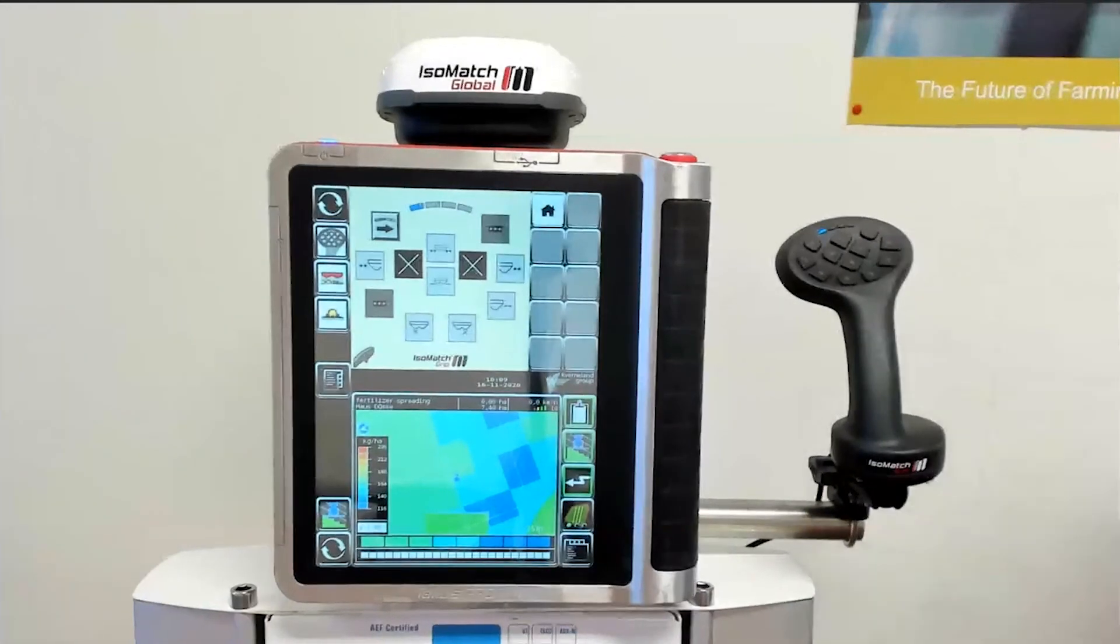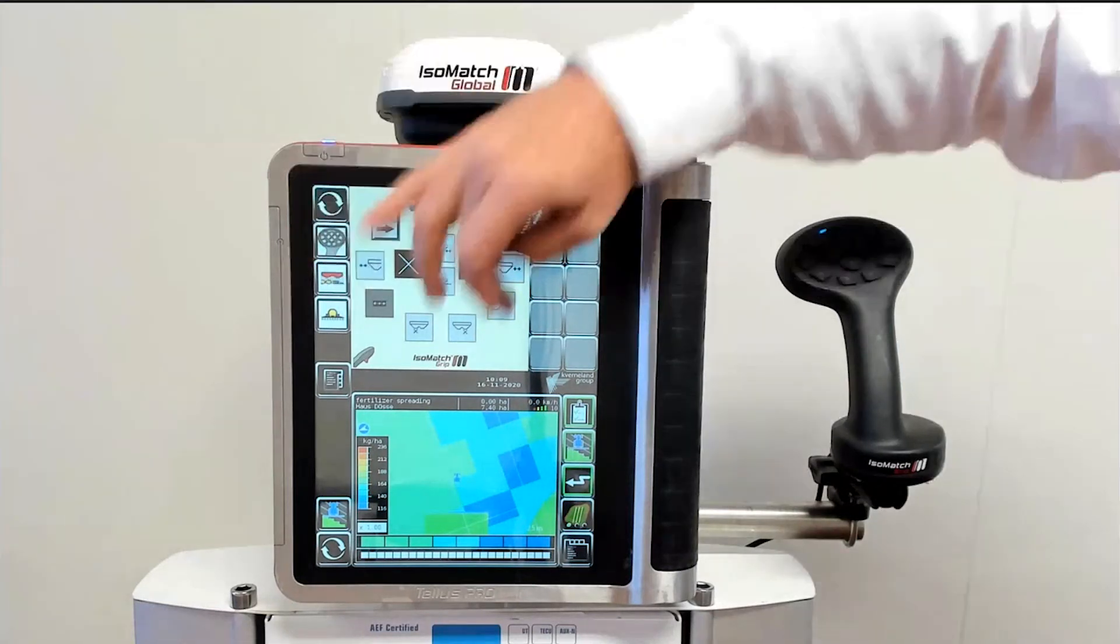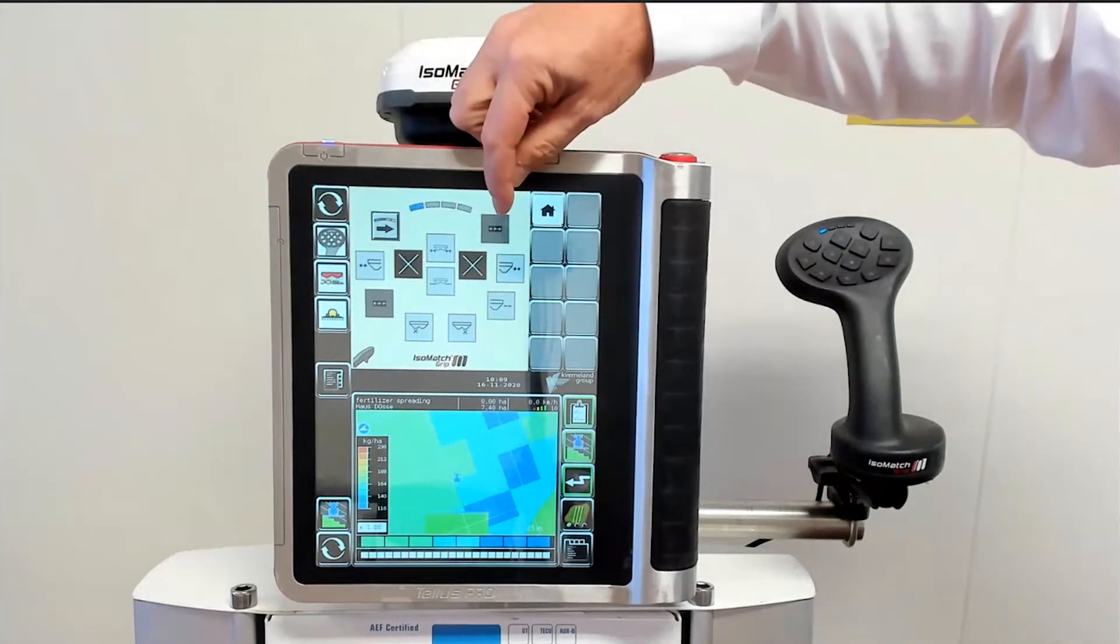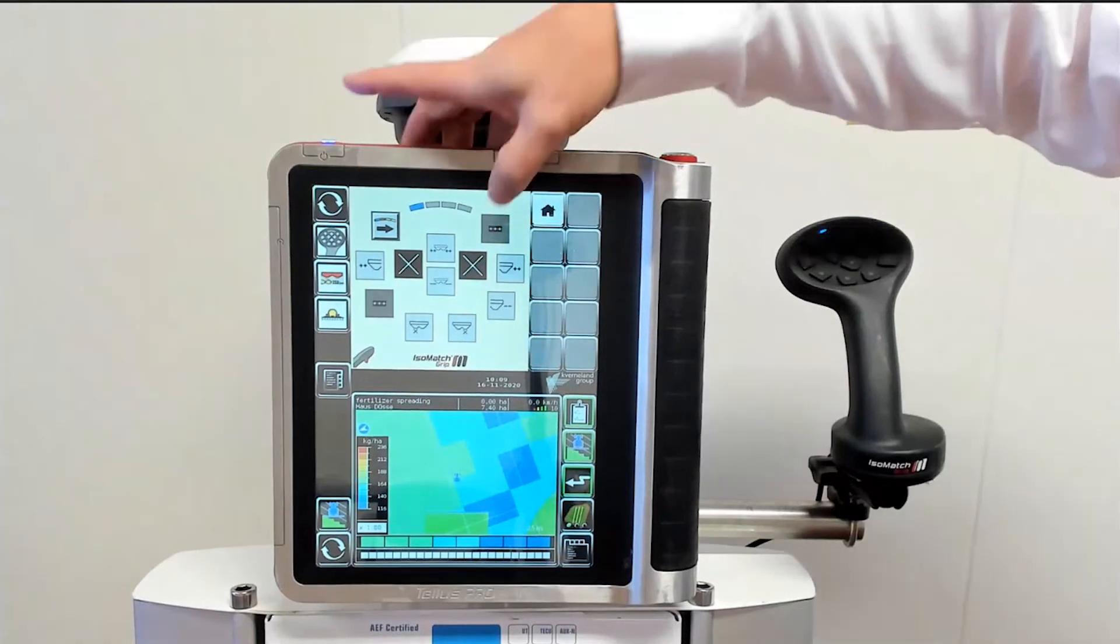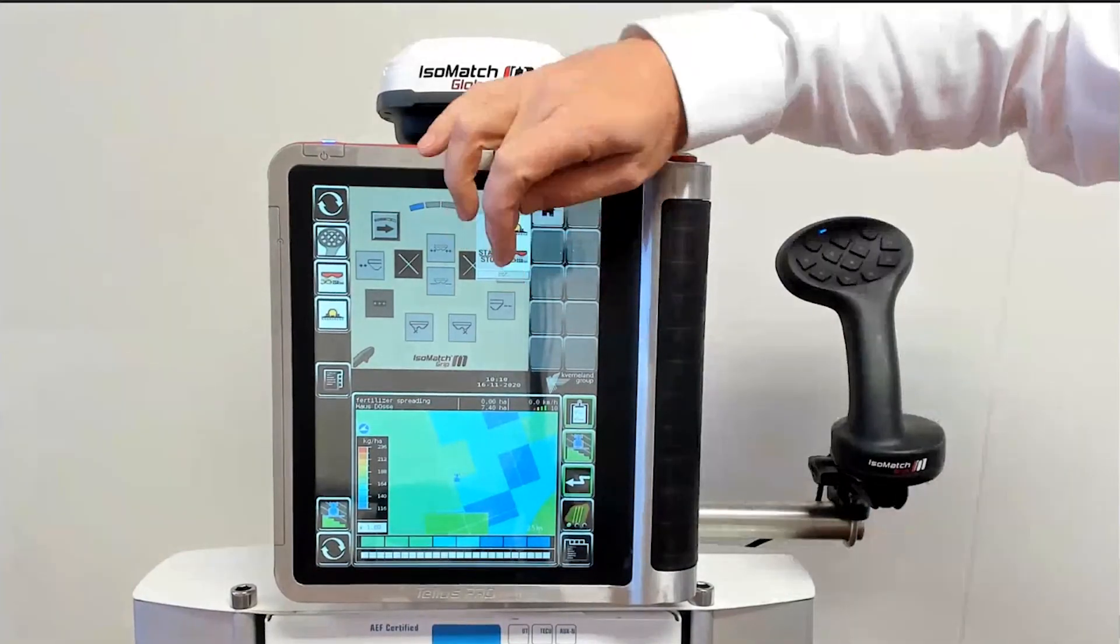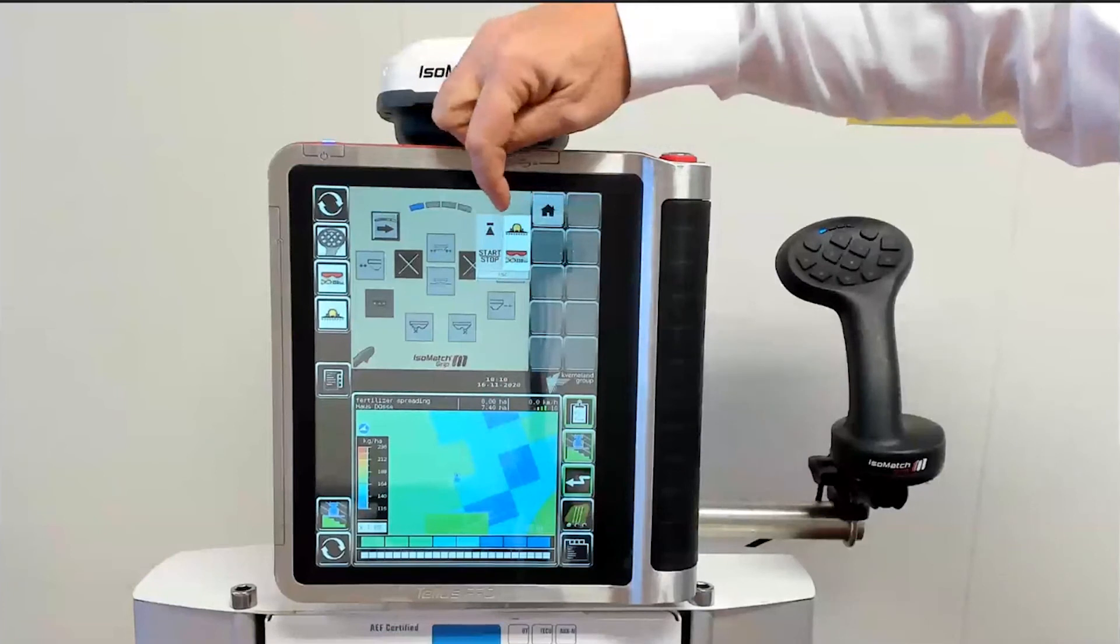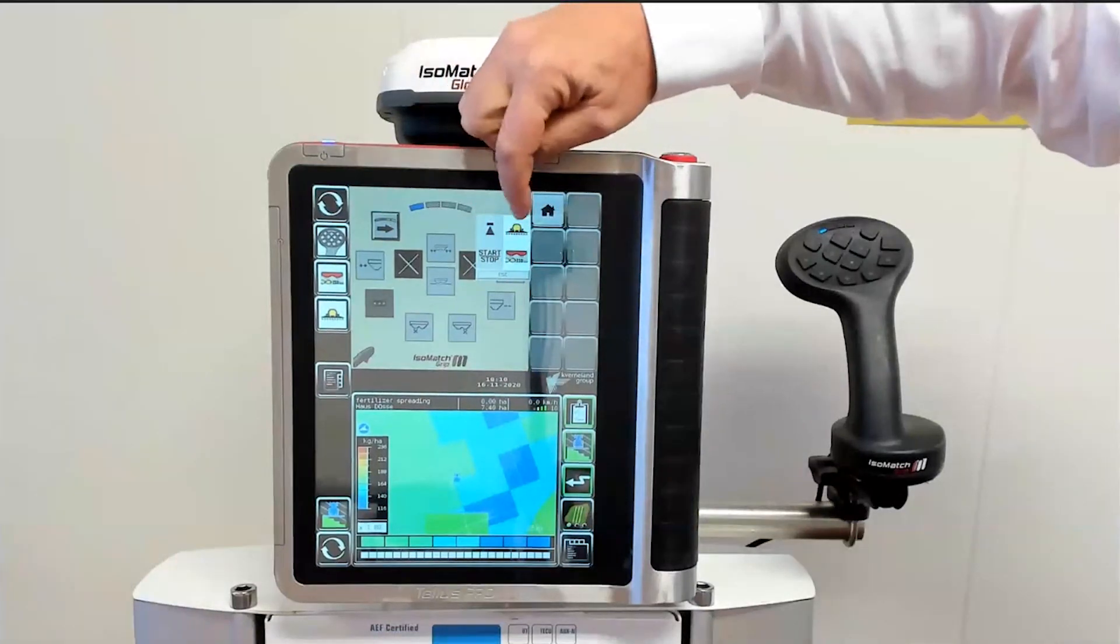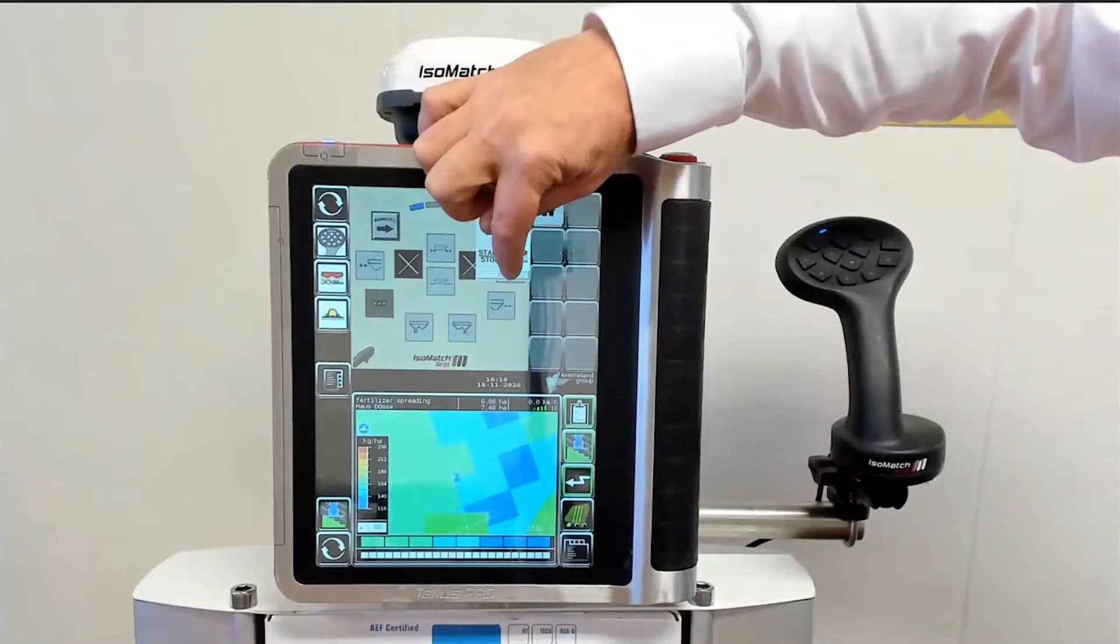If multiple functions are allocated to one button, this is shown in the grip's screen with the plus plus plus symbol. By pushing this symbol, you will see which machine and which function are allocated to the specific button of the grip. In this example, start-stop for the sprayer and the spreader are both on the same button.